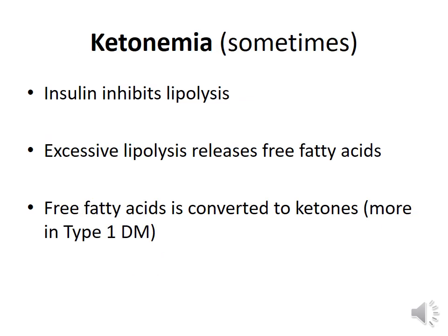Sometimes there is ketonemia, usually seen in type 1 diabetes because insulin lack is severe. Severe lack of insulin leads to excessive lipolysis releasing free fatty acids, which are converted into ketones — acetone, acetoacetate, and beta-hydroxybutyric acid. Formation of ketone bodies is responsible for acidosis, and when severe, gives rise to diabetic ketoacidotic coma. Ketone bodies also interfere with glucose utilization by the brain, causing altered consciousness and potentially diabetic coma.